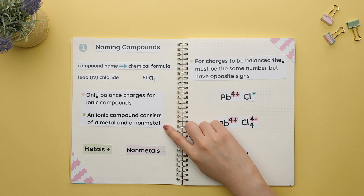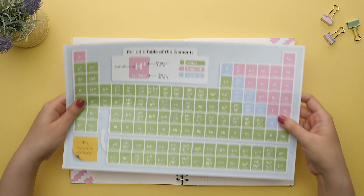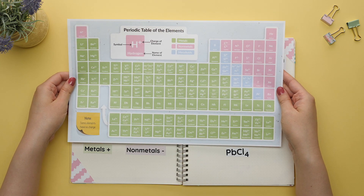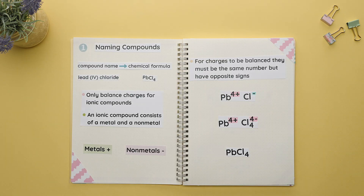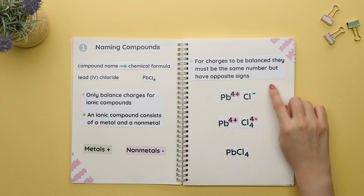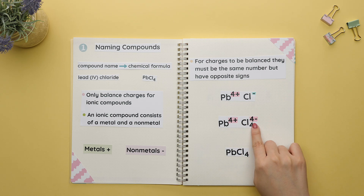An ionic compound consists of a metal and a non-metal, where metals have positive charges and non-metals have negative charges. For charges to be balanced they must be the same number but have opposite signs.